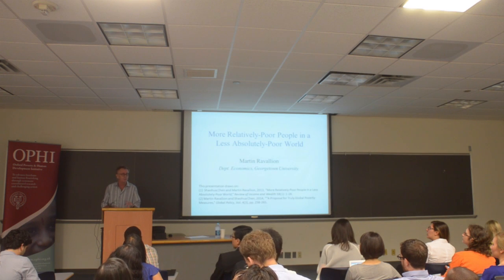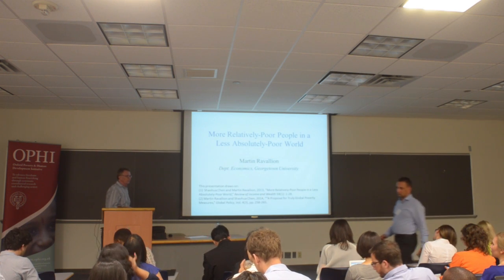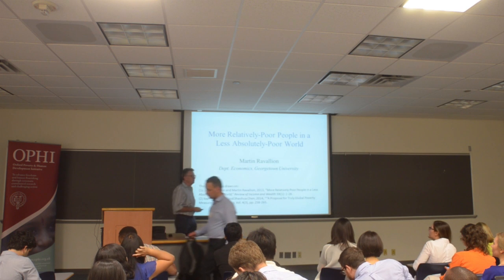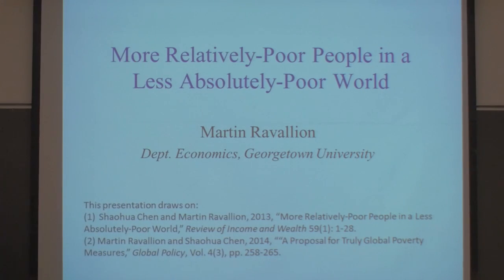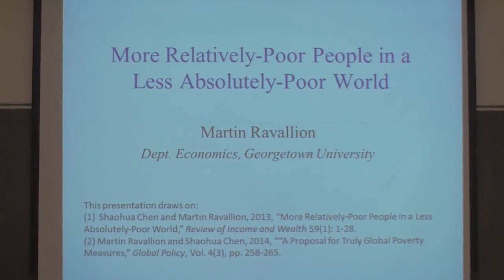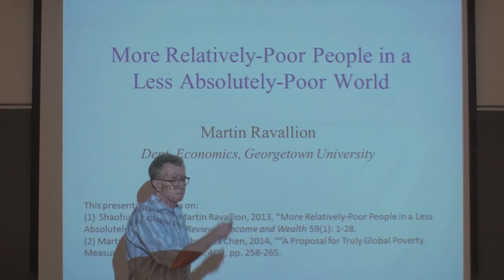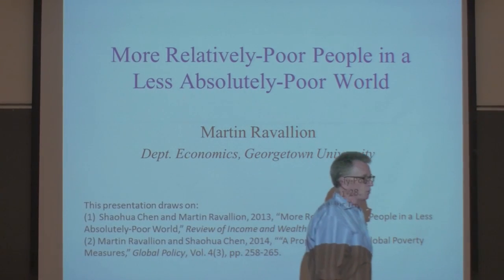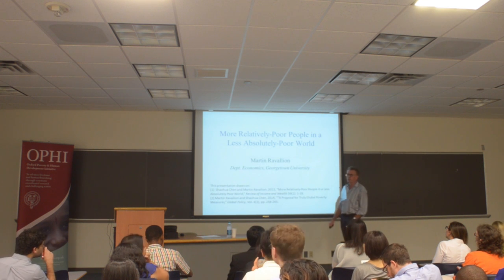I'm going to talk about absolute and relative poverty. I'm trying to make some sense of that distinction, which goes back a long way, but I'm trying to say something new about it. The title of this talk really summarizes the results of the study: more relatively poor people in a less absolutely poor world. I'm going to try and convince you that's the conclusion, and then we're going to walk through various solutions about absolute and relative poverty.